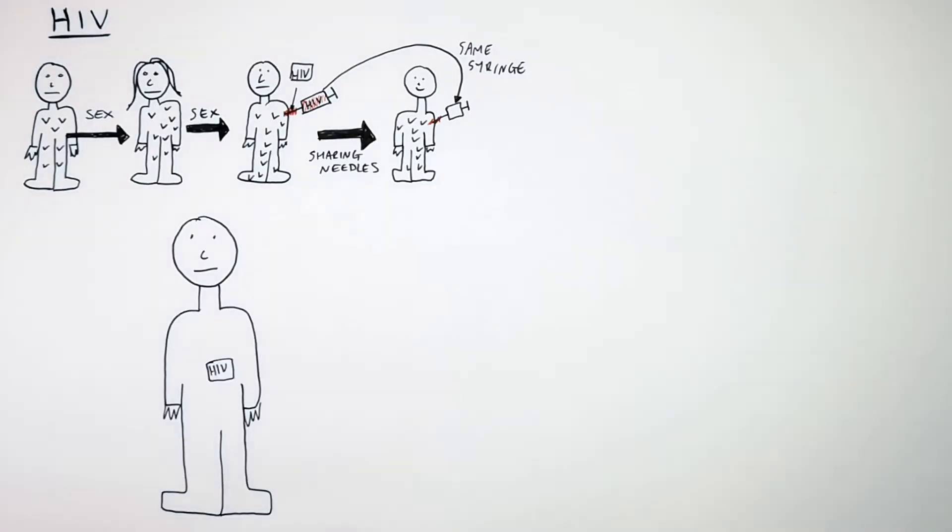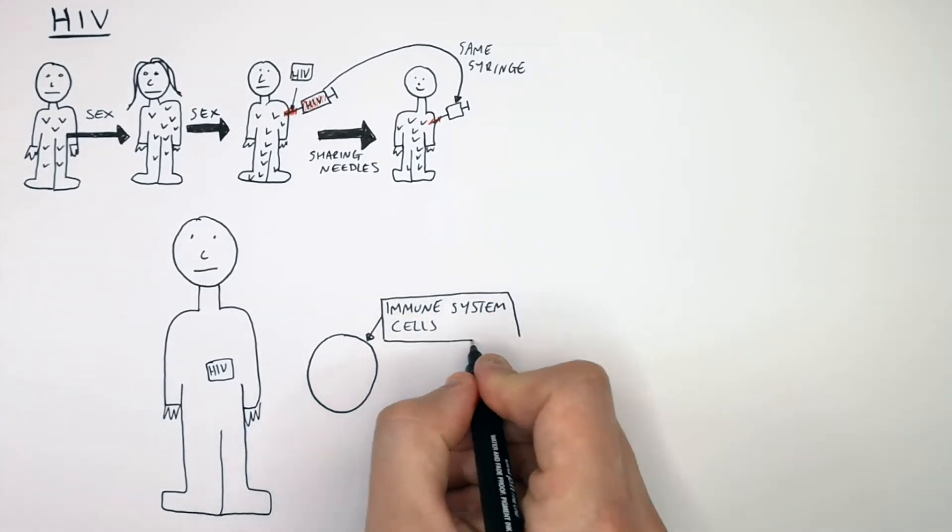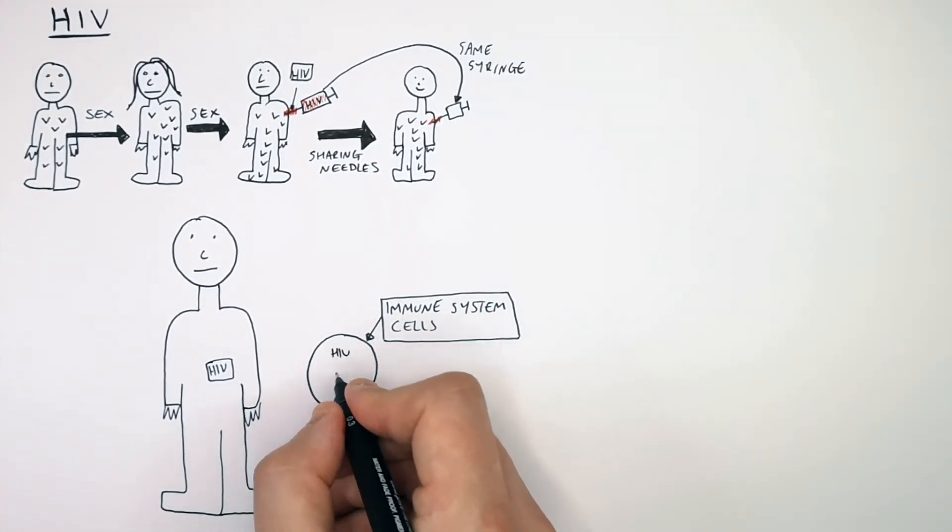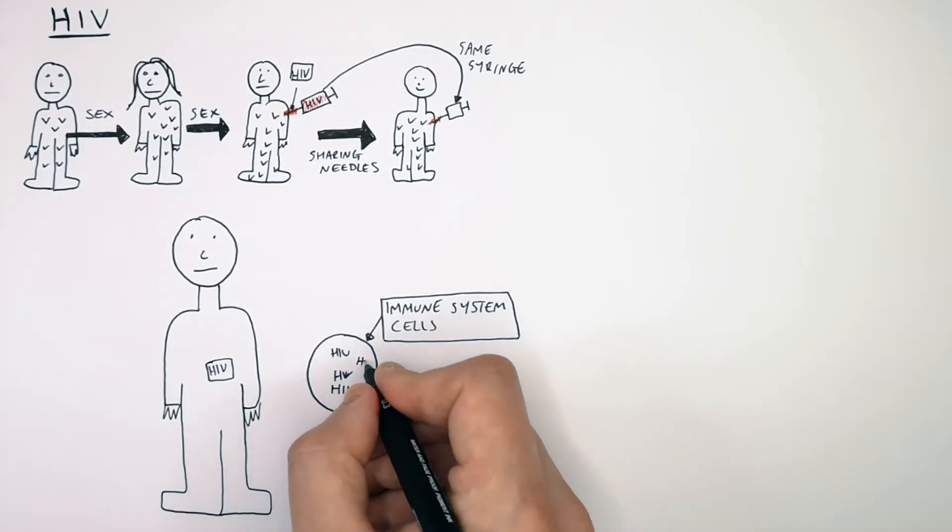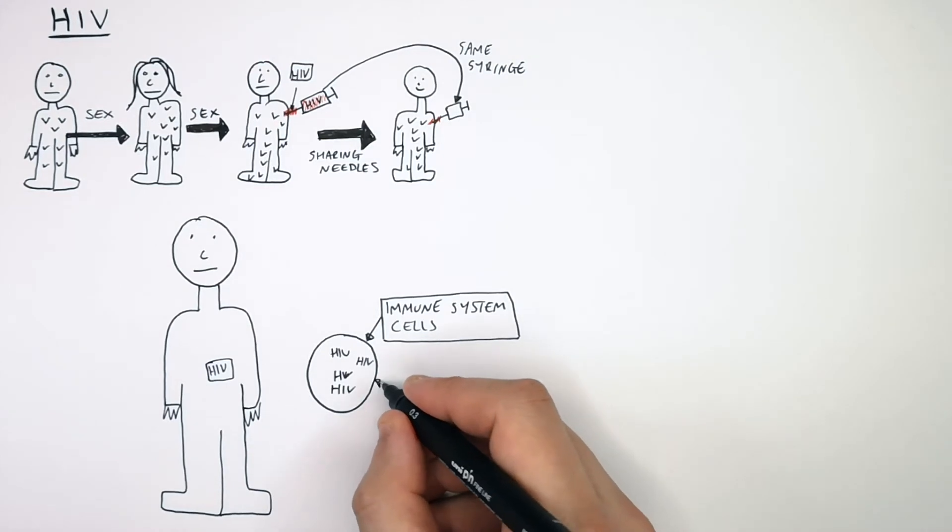This person now has an HIV infection. But what does HIV do to a person? This here is an example of an immune system cell. HIV infects the immune system cells. So HIV enters the immune system cells and HIV damages the immune system cells.